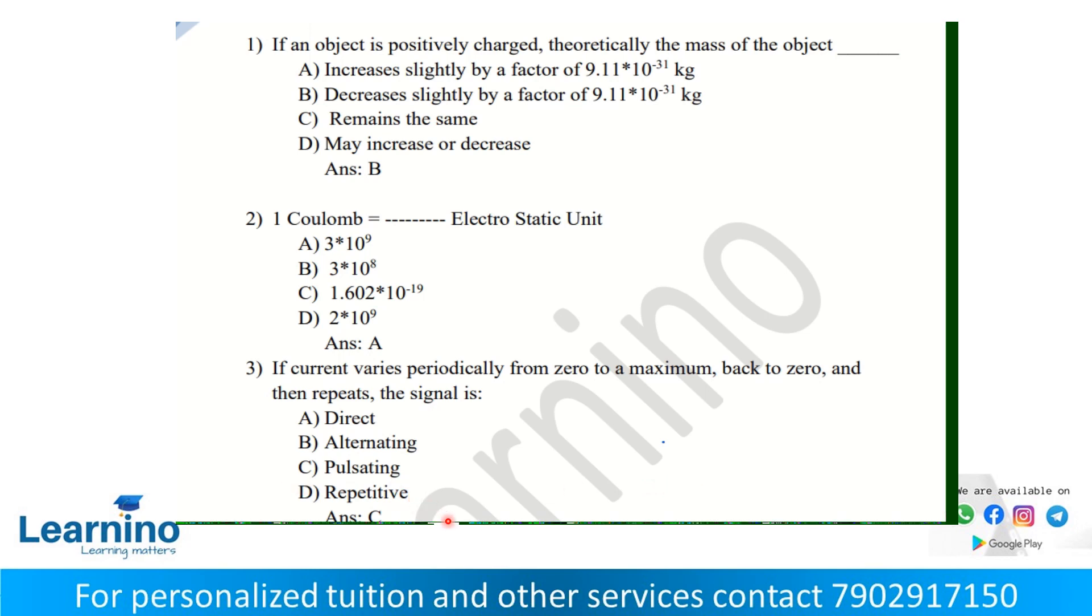1 coulomb is equal to electrostatic unit. It is a unit of charge in the SI system, while electrostatic unit is in the CGS system. So the answer is 1 coulomb equals 3 into 10 raised to 9 electrostatic units. Similarly, 1 newton equals 10 raised to 5 dynes. The answer is A.